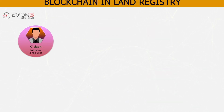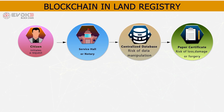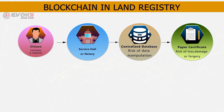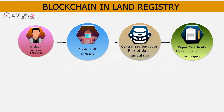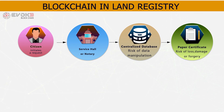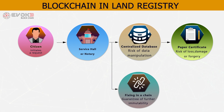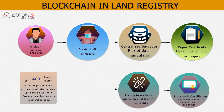Blockchain and land registry. A citizen initiates a request to a service hall or notary. In the current scenario, a centralized database is used, which carries risk of data manipulation. Since paperwork is involved, there are also risks of loss, damage, or forgery. Using a blockchain-based platform, data is fixed in a chain, guaranteeing immutability, and public data can be changed only by the owner.